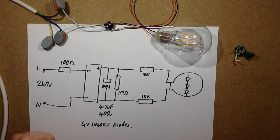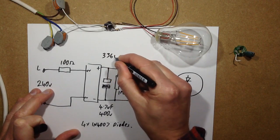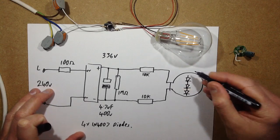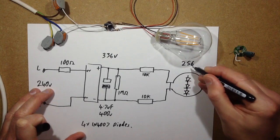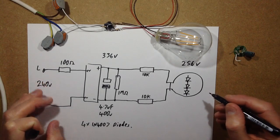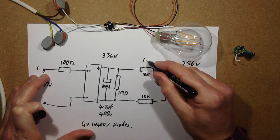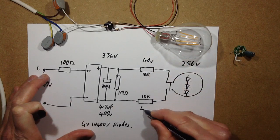So the voltage across the capacitor was 336 volts, the voltage across the lamp was 256 volts, the voltage dropped across the resistors was very conveniently 80 volts. But that means there's two of them in series, that there's 40 volts dropped across each resistor.